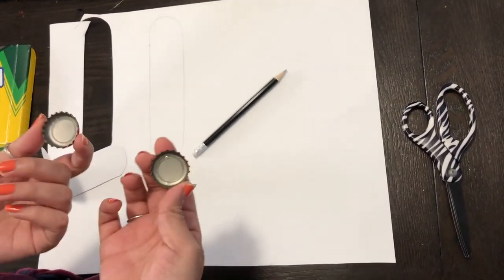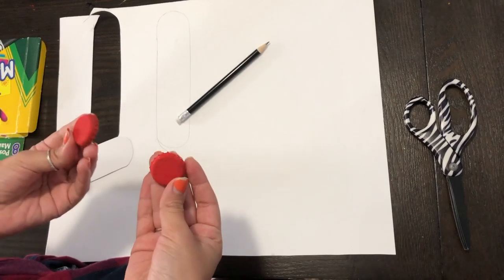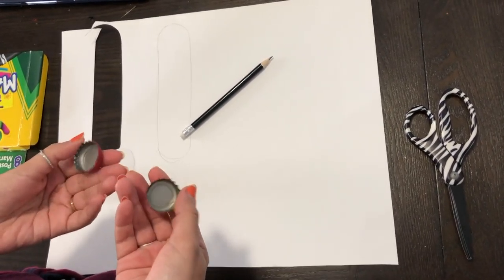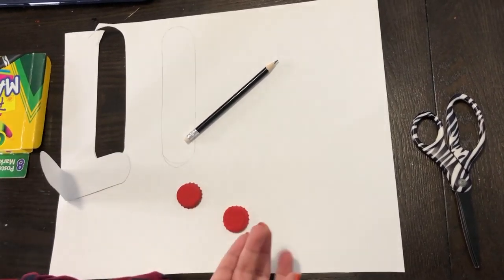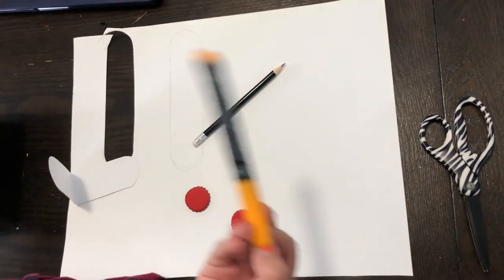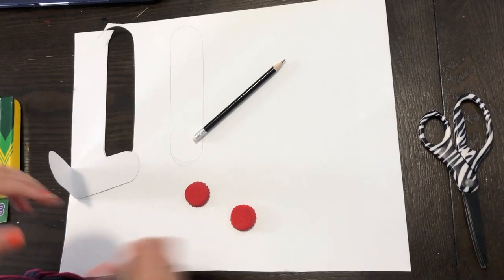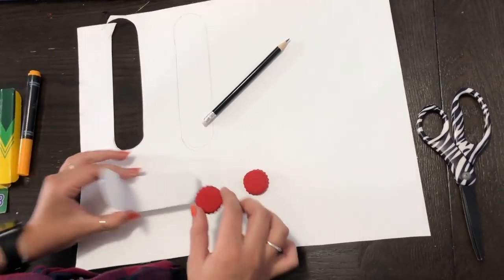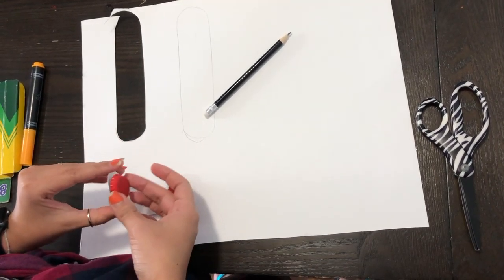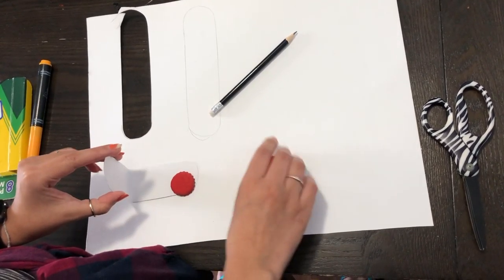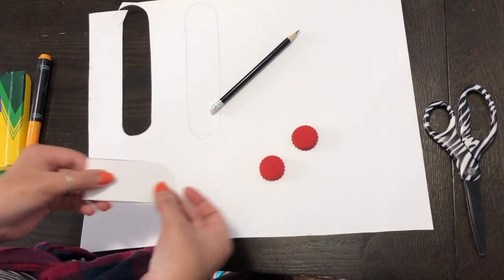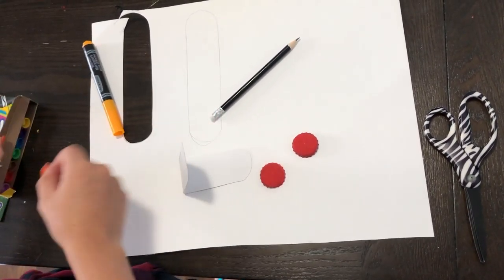So you're gonna get your bottle cap. I painted mine, you don't have to paint yours, you can leave them just silver or gold however they are, or you can paint them, or if you don't have paint you can just use a marker and color over it. So you're gonna need two of those, and then you're gonna hot glue them on each side. But while the hot glue is warming up, you can decorate it using markers.